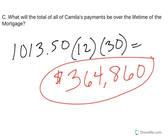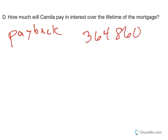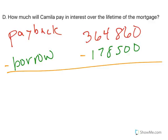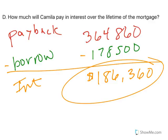Understand that she didn't borrow anywhere near that amount. How much will she pay in interest? Her total payback is $364,860 and she borrowed $178,500. The difference between what you paid back and what you borrowed is the interest. When you subtract those, you get $186,360. She paid more in interest than she paid for the house — she could have bought two houses for the price of the interest. That's just crazy.